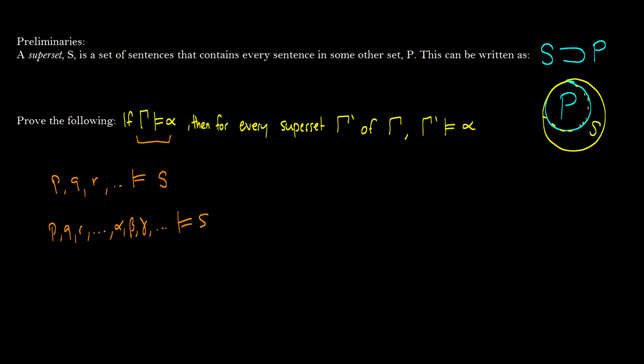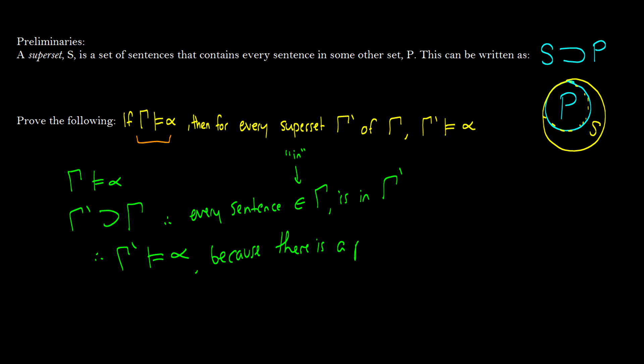So, what we're going to do is, we're going to say, okay, well, we have our supposition that gamma proves alpha. So, we say gamma prime is a superset of gamma. Therefore, every sentence in gamma, which this just means in, so every sentence in gamma is in gamma prime. Therefore, gamma prime will also entail alpha. Because there is a proof, because there is a proof of alpha in gamma.